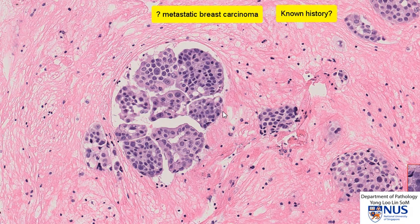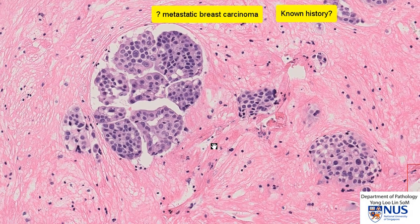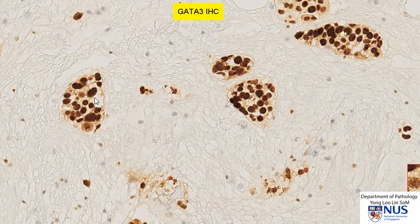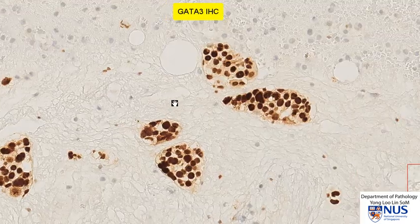We would also be considering other adenocarcinomas including lung and gastrointestinal tract, for example, if there is no history. With this particular patient, we would want to do some immunohistochemistry. This is GATA3, which is an immunohistochemical marker for breast.